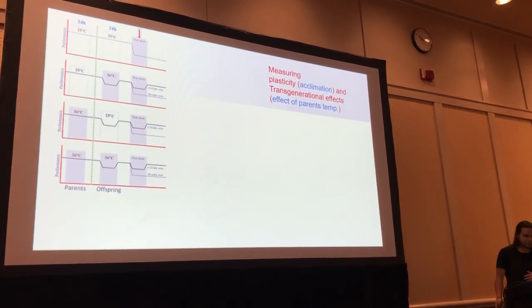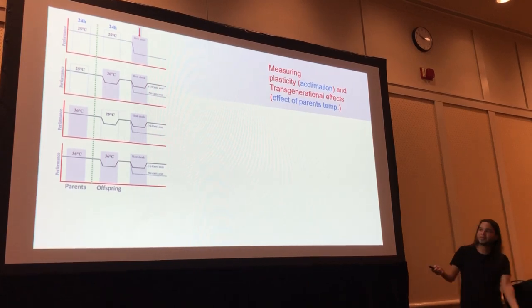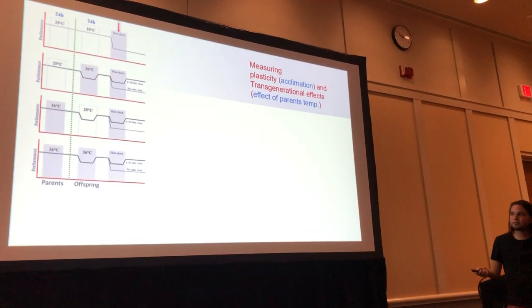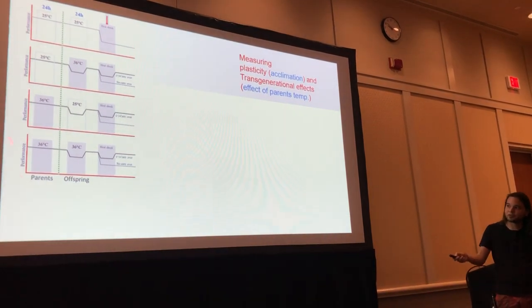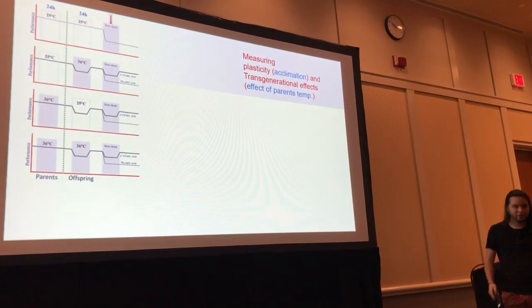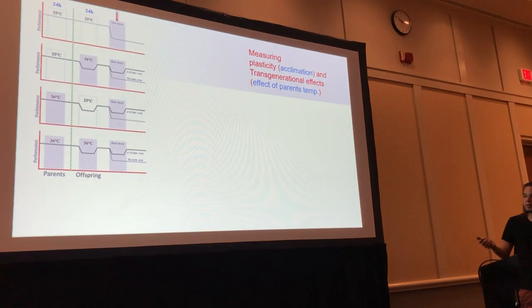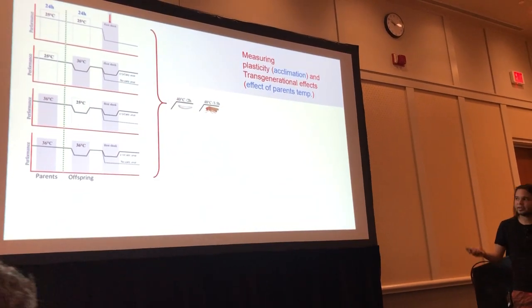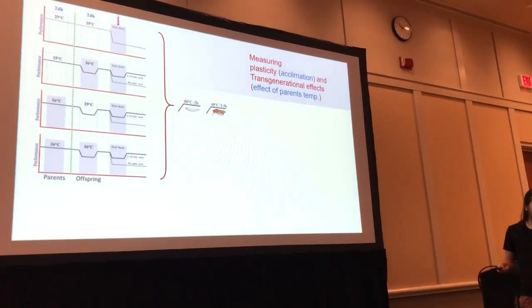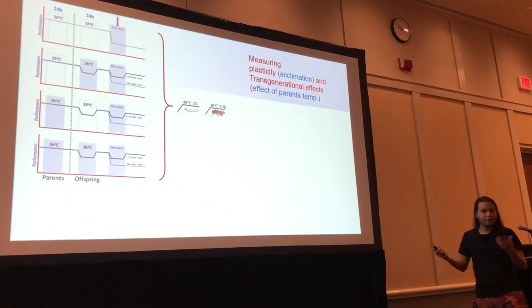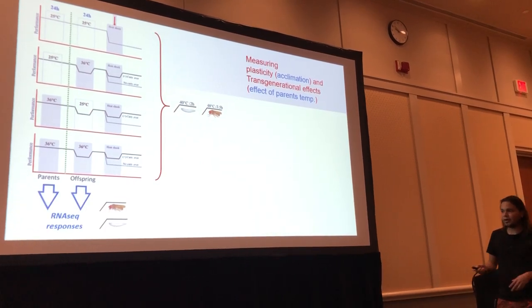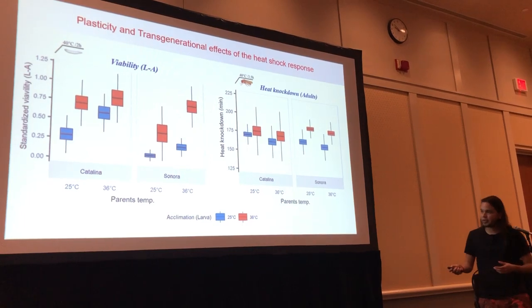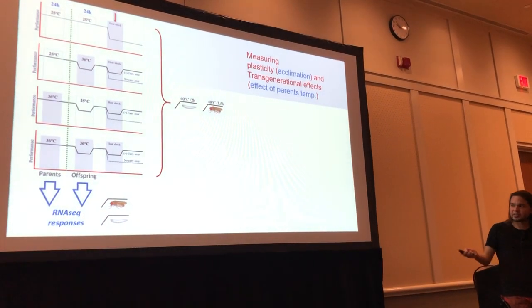For that, we performed experiments across two generations. We exposed flies to two different temperatures — a high temperature and a control — across two generations: in the parents, and then in the next generation for the offspring, for 24 hours. As a result of this combination of treatments, we measured two things: first, the performance post-heat shock, basically measured in terms of larval viability — how many larvae survived after a strong heat shock. We also collected samples to perform RNA-seq analyses in larvae and adults.